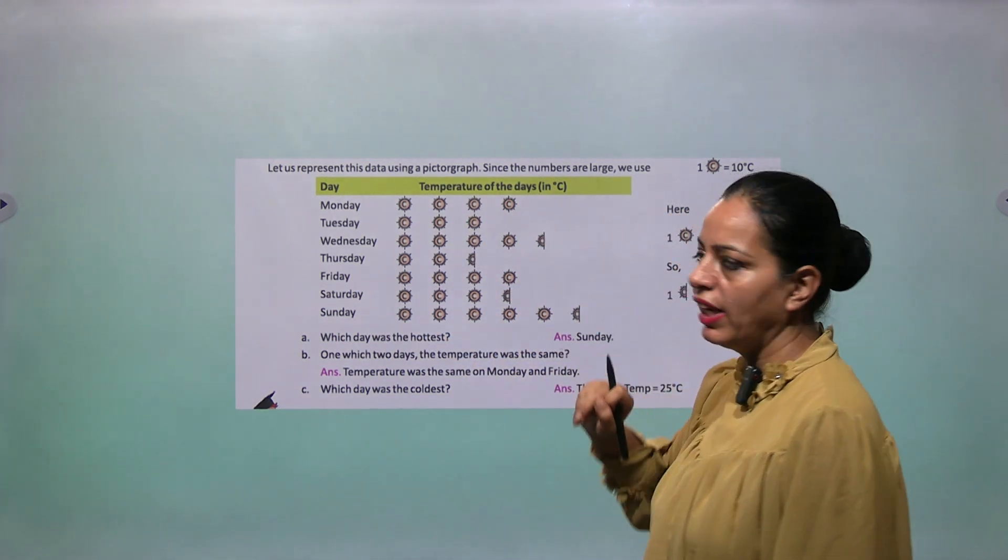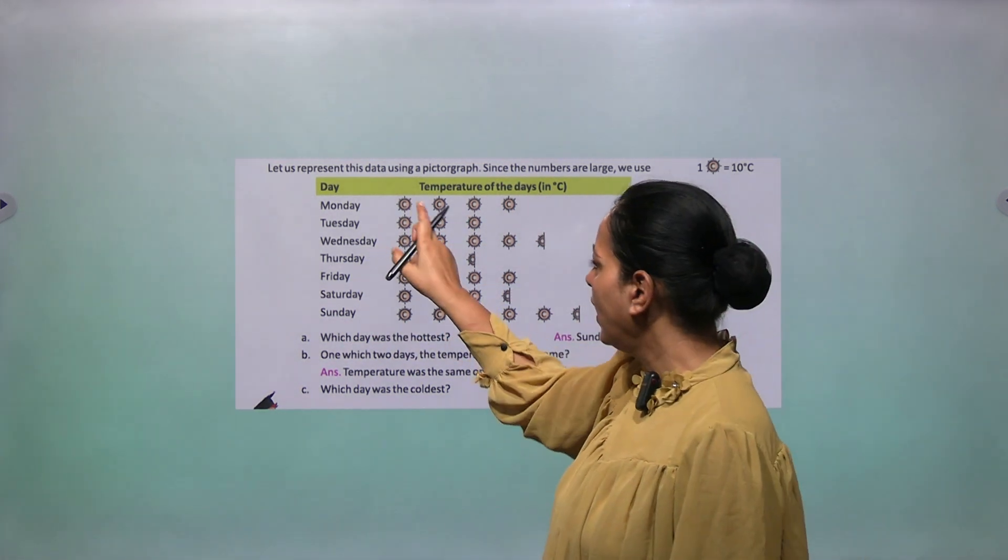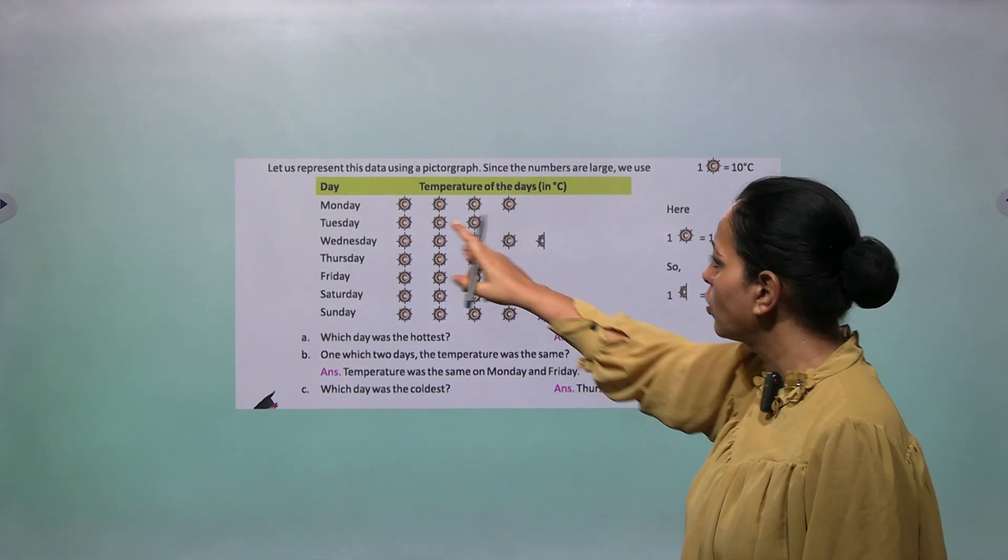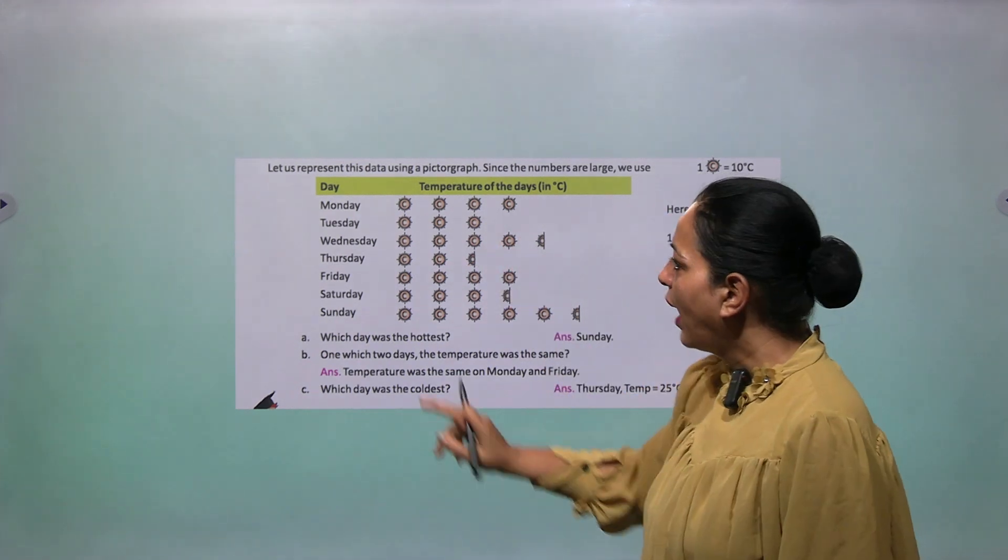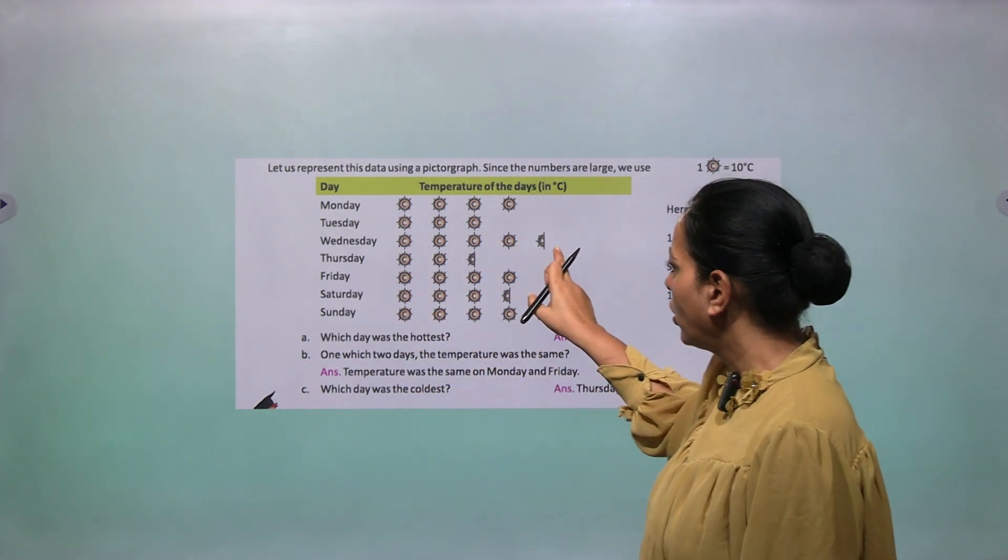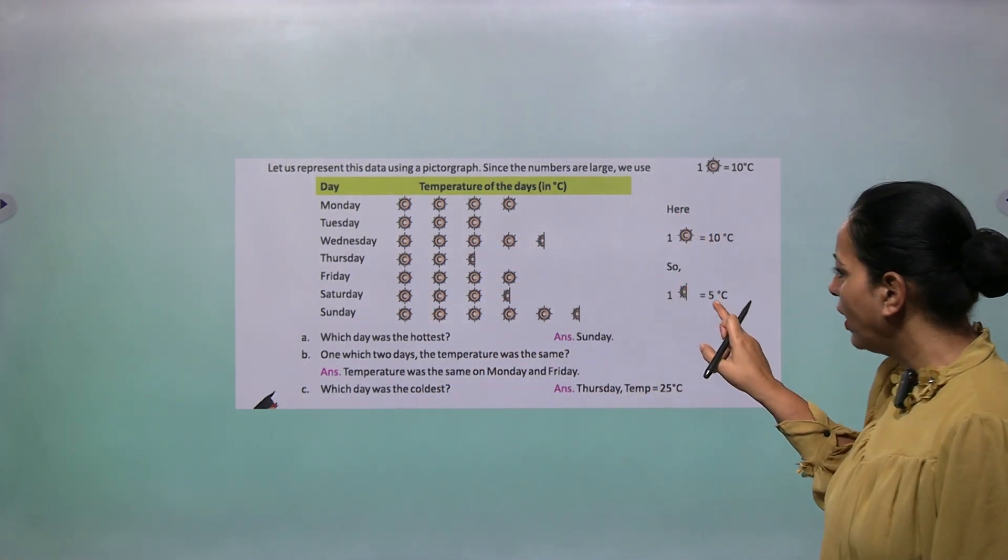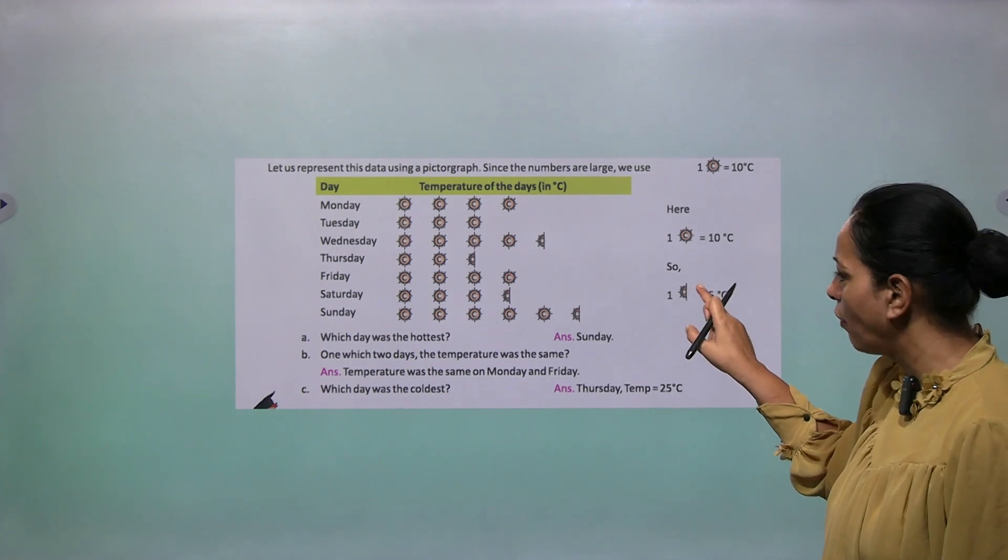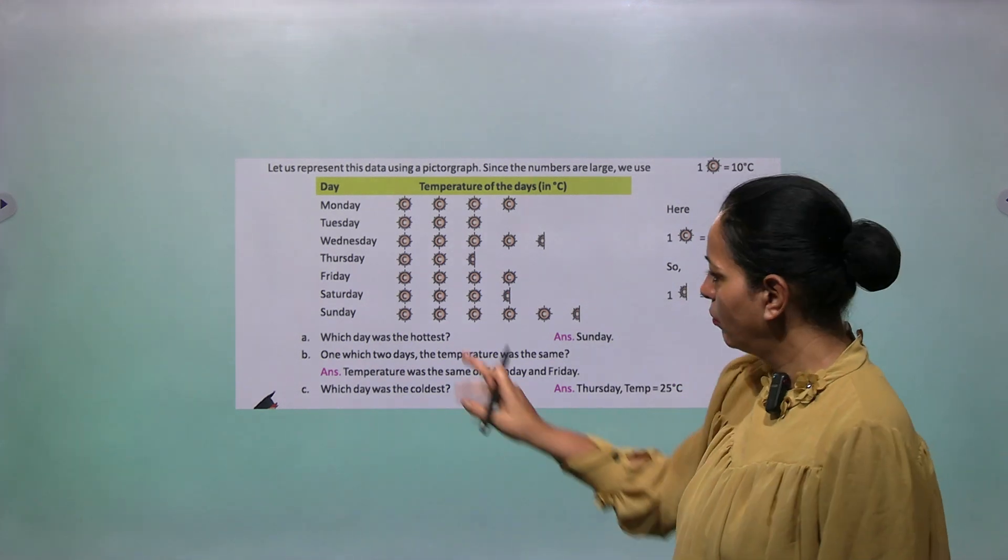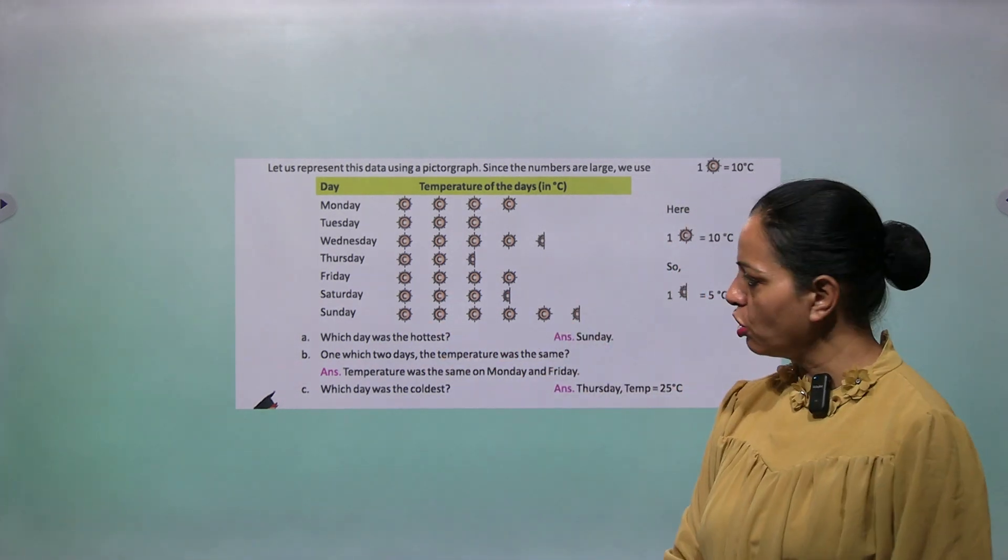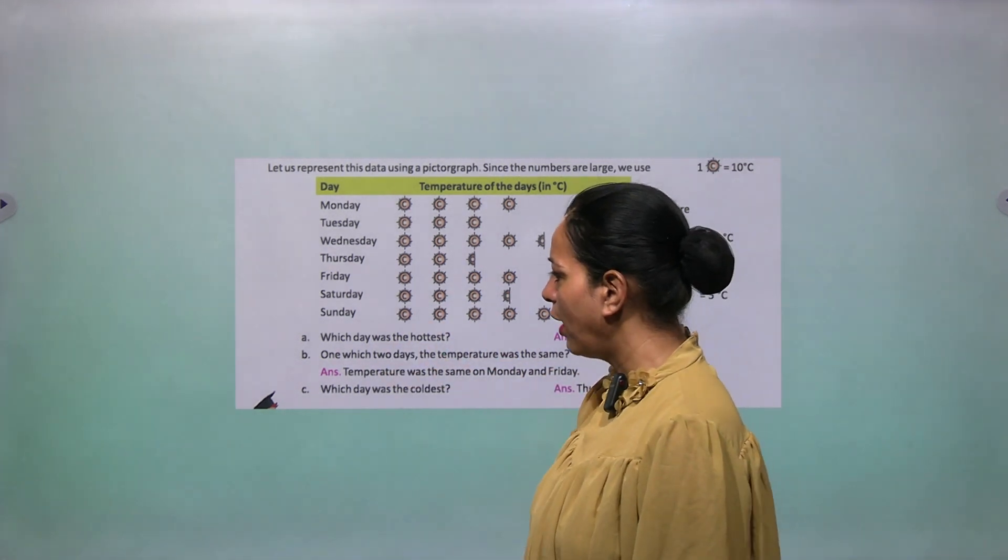Days here and temperature of the days in degree Celsius. Monday it is 40 degree Celsius, so four suns. Tuesday 30, so three. Wednesday we have 45, so 45 we will take half of this sun. This stands for five. So like this you can draw the picture.